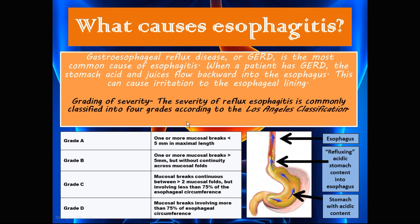There is a specific grading system used to grade the severity of reflux esophagitis called the Los Angeles Classification. Grade A is one or more mucosal breaks less than 5 mm in length. Grade B is one or more mucosal breaks more than 5 mm but without continuity across mucosal folds. Grade C is mucosal breaks continuous between more than two mucosal folds but involving less than 75% of the esophageal circumference. Grade D is mucosal breaks involving more than 75% of the esophageal circumference.